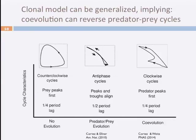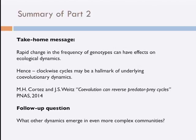To summarize these first two parts in three pictures: in the absence of evolution, one expects counter-clockwise cycles; with evolution but not co-evolution, one expects to observe cryptic or antiphase cycles; and with co-evolution, it opens the possibility of a new signature — that of clockwise cycles. With that, I'm going to move to the last part of the talk. I'm going to try to scale up rapidly — we have many more than a handful of types in natural systems, so I need to move toward more complex communities.